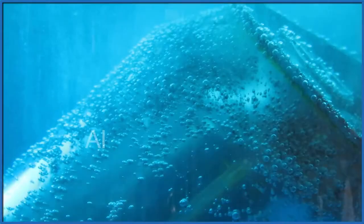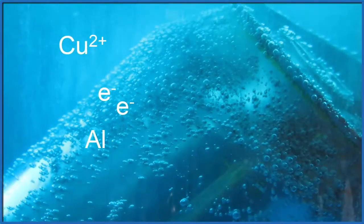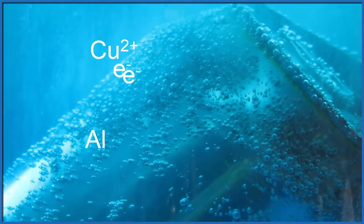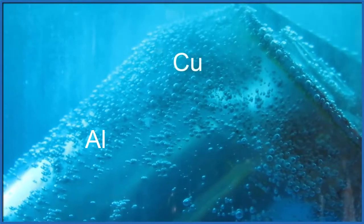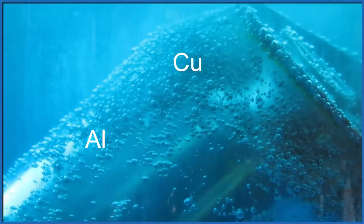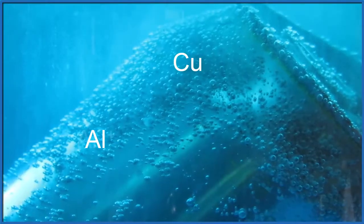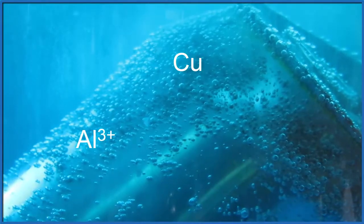What's happening is that the aluminum, it's losing electrons to the Cu2+. The Cu2+, it then becomes neutral. Just Cu, solid copper. That's what we see forming. The aluminum, it's lost electrons. It becomes a positive ion.